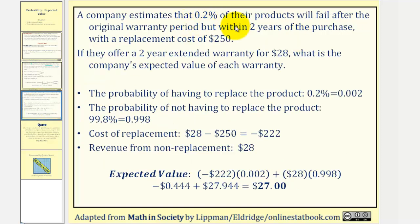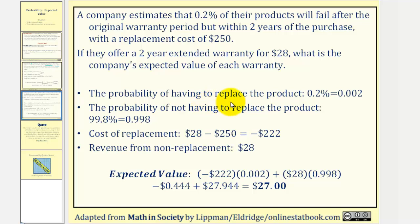A company estimates that 0.2% of their products will fail after the original warranty period but within two years of purchase, with a replacement cost of $250. If they offer a two-year extended warranty for $28, what is the company's expected value of each warranty? The probability of having to replace the product is 0.2%, or 0.002 as a decimal, meaning the probability of not replacing is 0.998, or 99.8%.